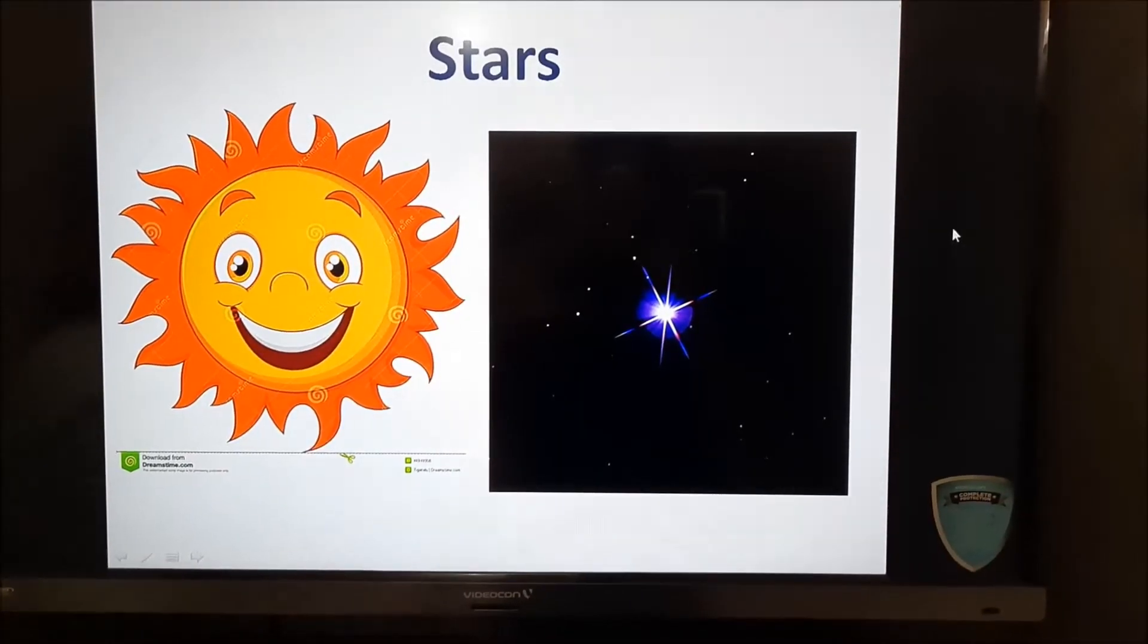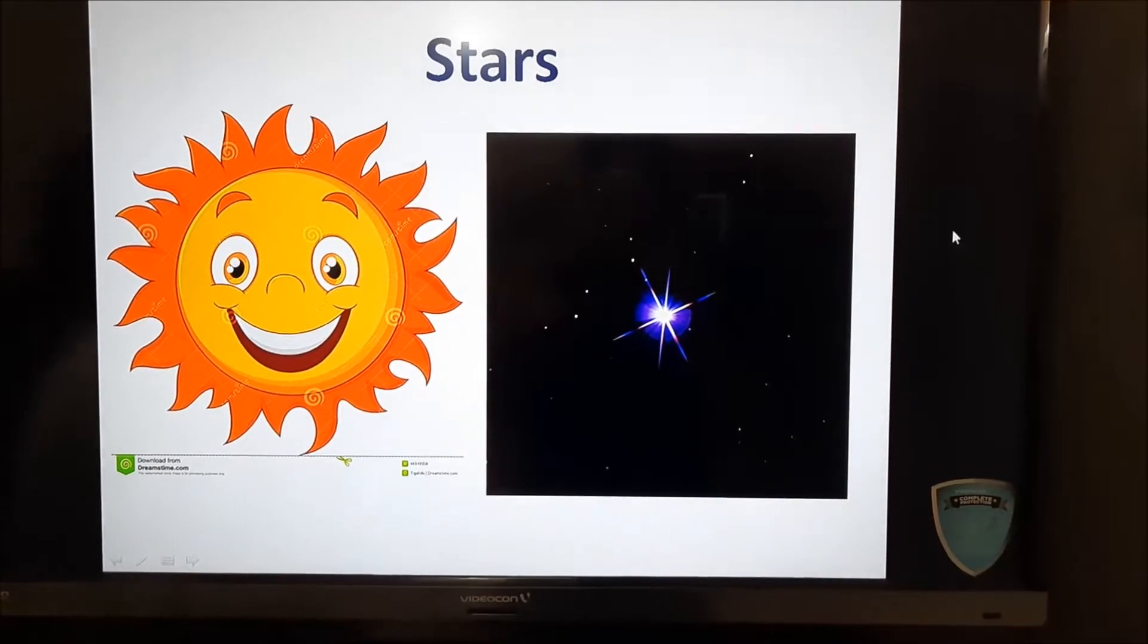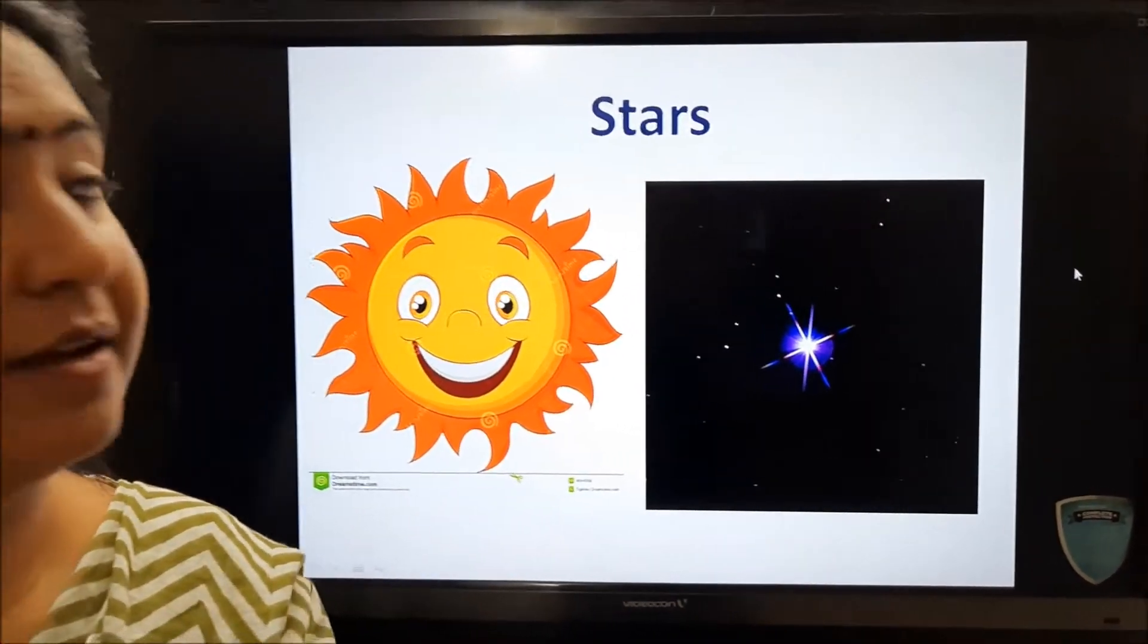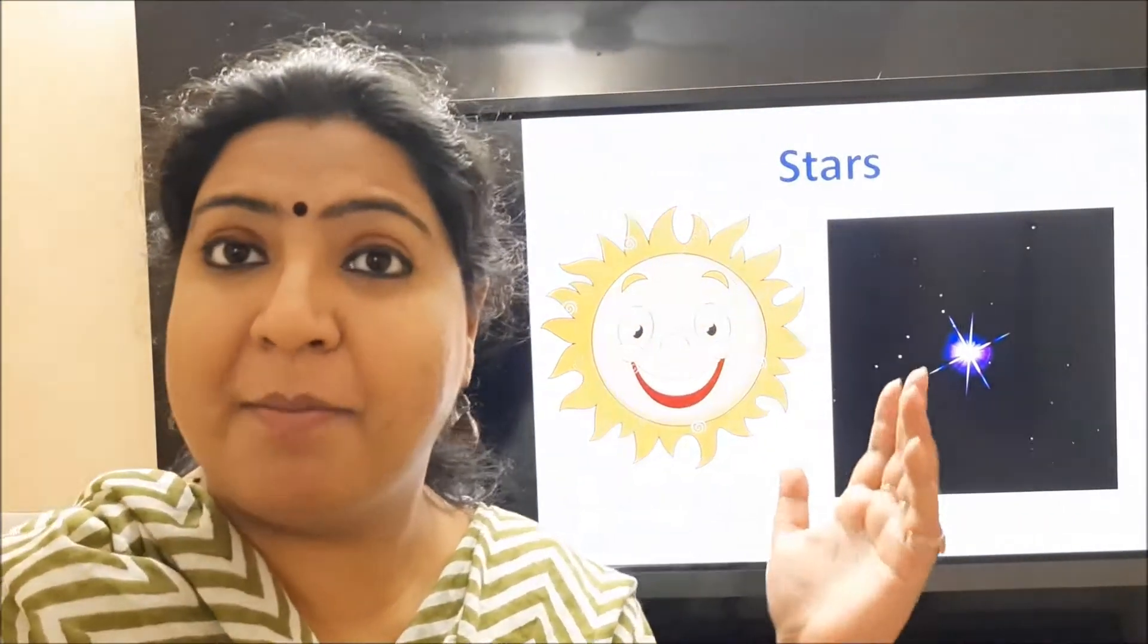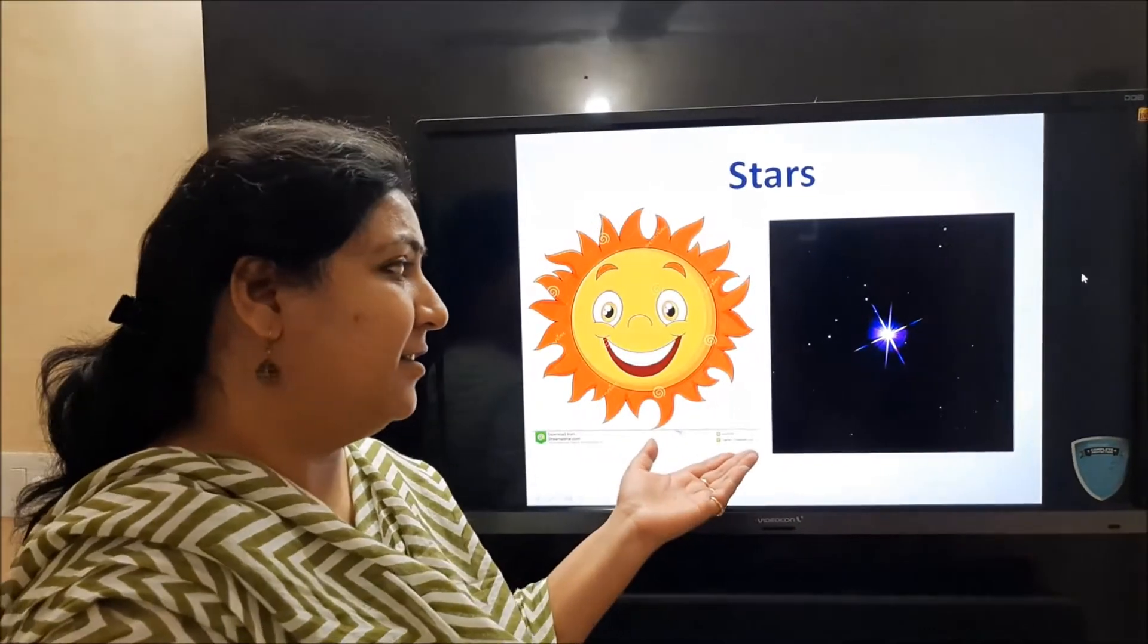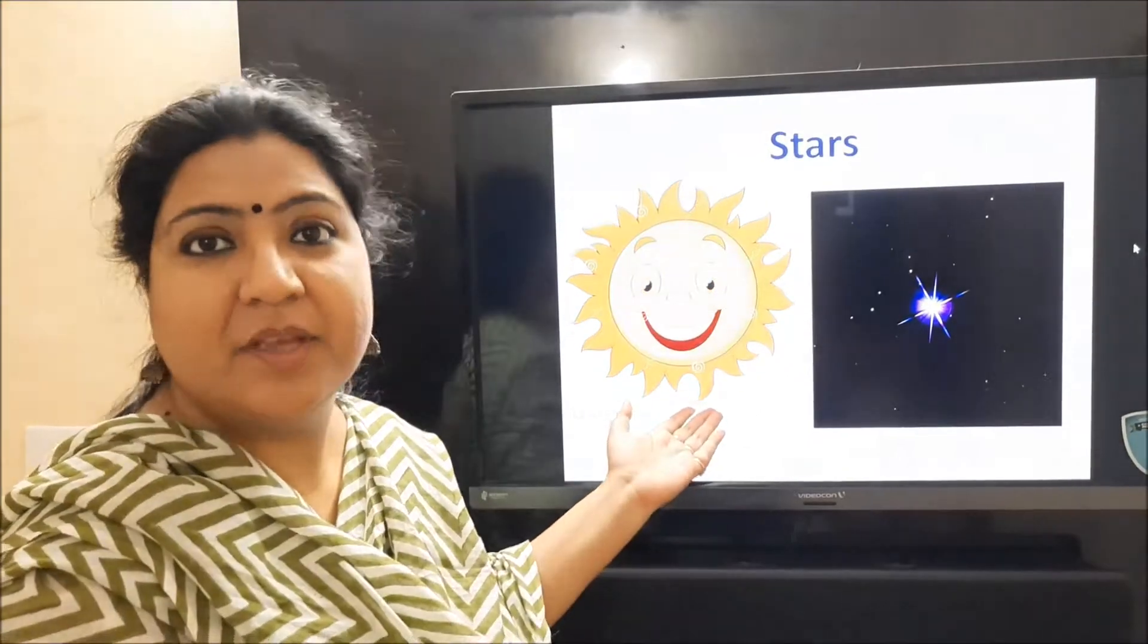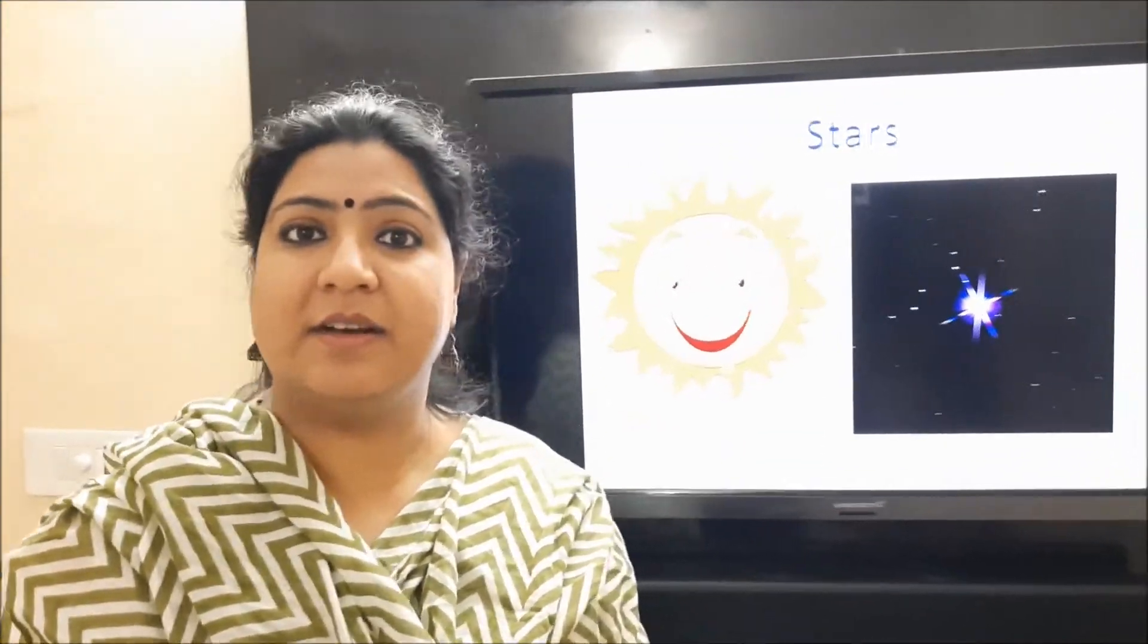So the star, a star is a huge glowing ball of gases. The stars that shine up above in the sky are these twinkling stars, and also the sun. Sun also is considered as a star. It gives us heat and light. Sun is the nearest star to our planet Earth.